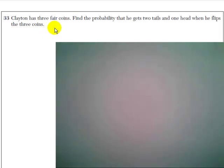Number 33. Clayton has three fair coins. Find the probability that he gets two tails and one head when he flips the three coins.